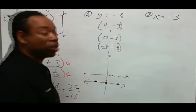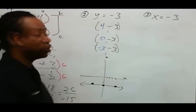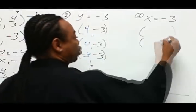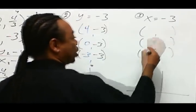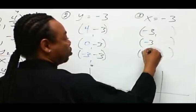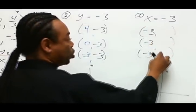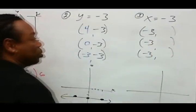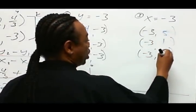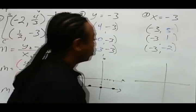Next, x equals negative 3 is also a special graph — those are going to be vertical lines. To create three points for that vertical line, since x is negative 3, we make all the x-values negative 3. There's no y here, so we can use any real number for y. Let's use 5, 1, and negative 2. You can make any three numbers you want.